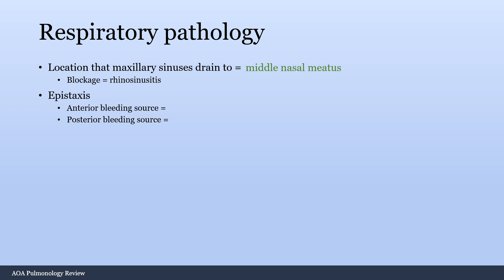Two main things you need to know about epistaxis: you can have an anterior bleeding source or a posterior bleeding source, and they want you to know what vessels are causing the bleeding — they ask this very commonly. If it's anterior bleeding, this is coming from Kiesselbach's plexus. If it's posterior bleeding, this is from the sphenopalatine artery, which is a branch of the internal carotid artery, and this is a life-threatening bleed. If somebody comes in with epistaxis and they're unstable, hemorrhaging through their nose, you should be more concerned of a sphenopalatine artery bleeding source.